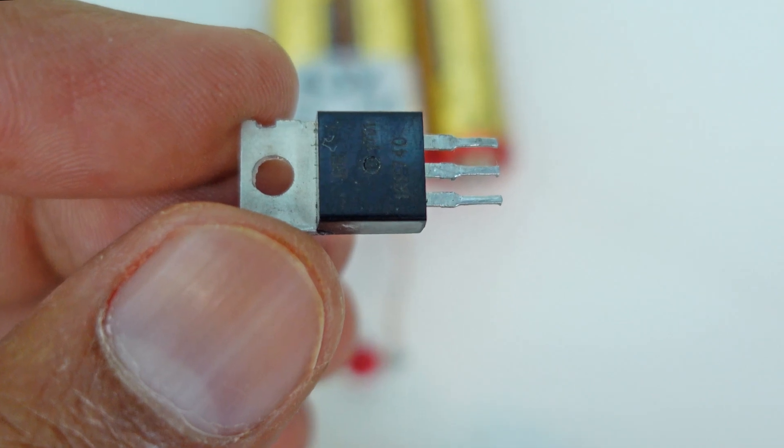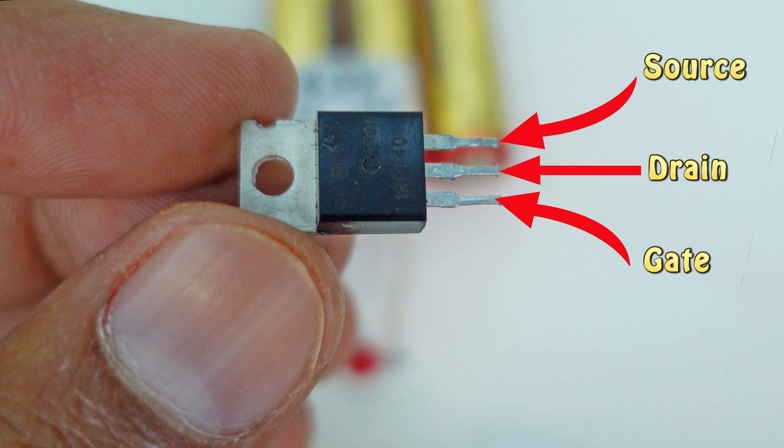First we understand the points of MOSFET transistor. Any MOSFET transistor always has three points: source, drain, and gate. The MOSFET receives current from the source. The MOSFET sends current out from the drain. And the gate acts as a switch which controls the flow of current.